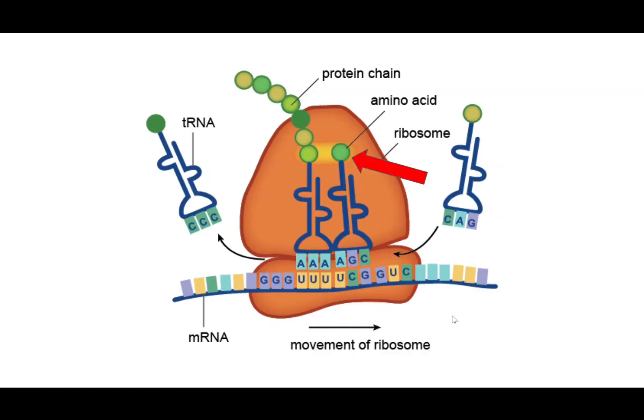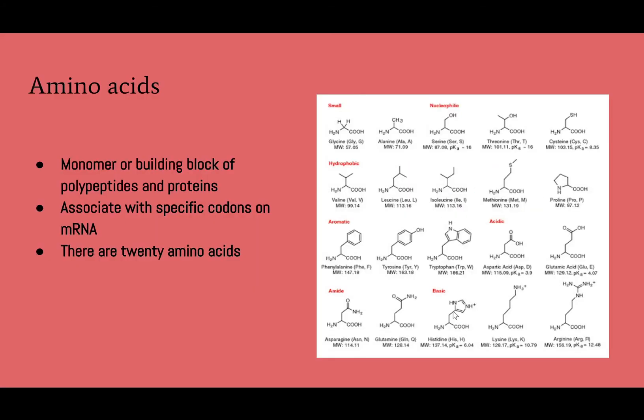Lastly, this arrow is pointing to an amino acid. Amino acids are the monomer, or building block, of polypeptides and proteins. They associate with specific codons on the mRNA and with specific tRNA.